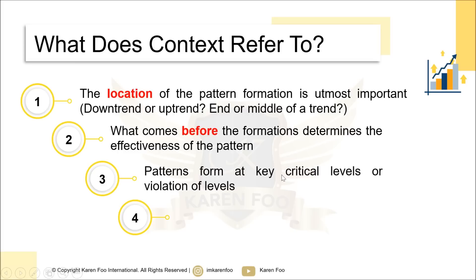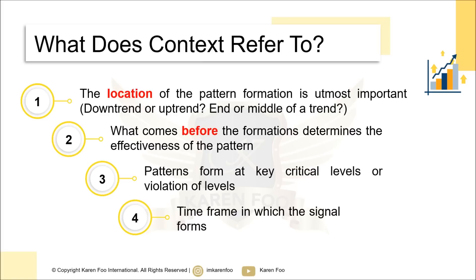Context also refers to the time frame in which the signal forms. The higher the time frame, the longer the signal will last and the higher the probability. Smaller time frames like one-minute or five-minute tend to be mostly noise, producing many false signals. The higher you go in time frame, the stronger the signal — so avoid using the one-minute time frame to trade candlesticks.